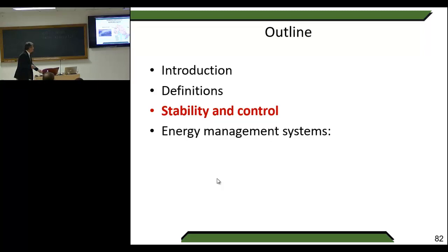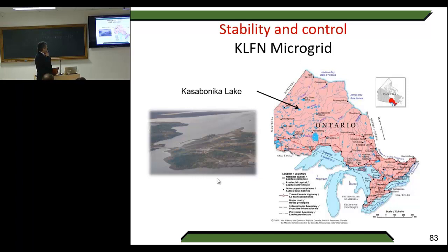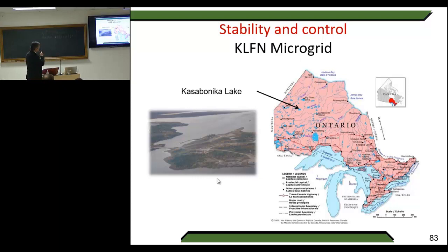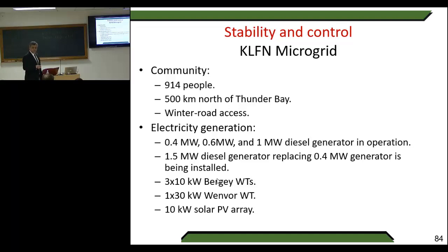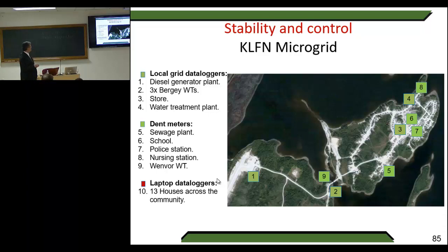Moving to stability and control, the Casabonica Lake microgrid from colleagues at Waterloo University is well-reported in several IEEE papers. It is located in Ontario and is about 10 times bigger than ours — in the range of megawatts. The microgrid has multiple diesel generators, four wind turbines, and a PV array, with the location of each shown in the network diagram.